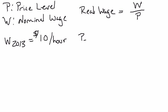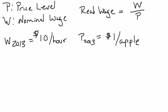Your price level in 2013 of apples — we're just going to stick with apples as the one good in this economy — is $1 per apple. Now, suppose we calculate the real wage. If I use the price level as my abbreviation for the average price of goods and services, in this case there's only one good, apples, so the price of apples is the price level. And I use the nominal wage, which I'll abbreviate W, which is how much you're earning per hour of work.